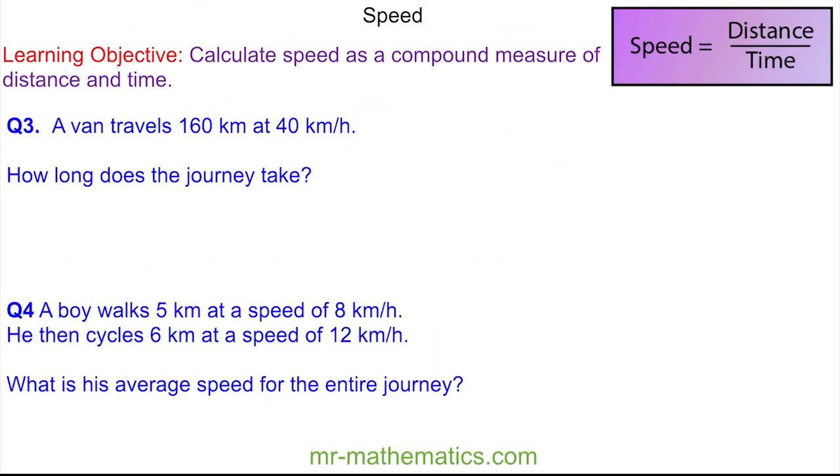In question three we're told a van travels 160 kilometers at 40 kilometers per hour, and we're asked to work out how long the journey takes. So we're going to substitute these values into our formula where the speed is 40 kilometers per hour, and this is the distance of 160 kilometers divided by the time which we're trying to find.